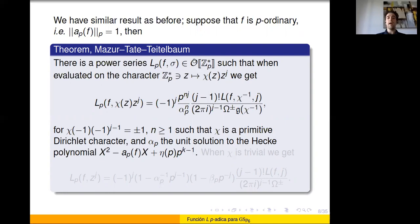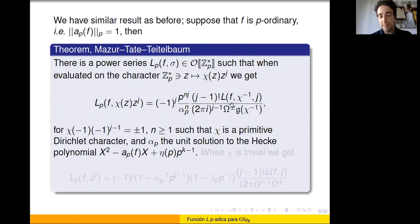Here alpha_p is the unit root of the Hecke polynomial — one of the possible eigenvalues for the U_p operator on the p-stabilization of f. When chi is trivial, instead of the Gauss sum factor we get some Euler factor — part of the Euler factor of the L-function of f at p. This alpha factor at p is symmetric to the factor we remove from the L-function. This is not a coincidence: there is a large series of conjectures that tell us we should expect this kind of behavior in general.